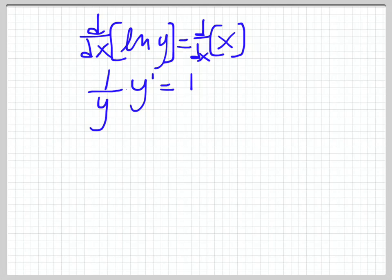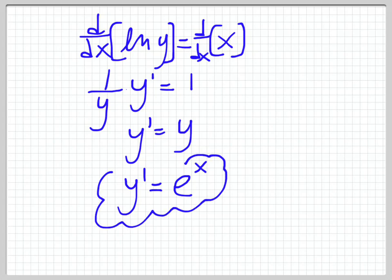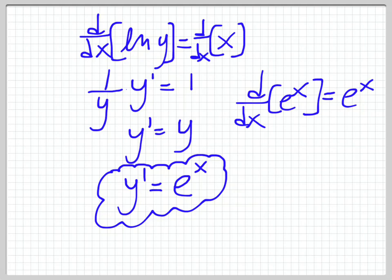So then what we can do is we can solve this for y prime. So y prime is equal to y times 1, which is just y. And of course we know that y is equal to e to the x. So there it is. That is the derivative of e to the x. So y prime is equal to e to the x. So we proved that the derivative of d over dx of e to the x is equal to e to the x.